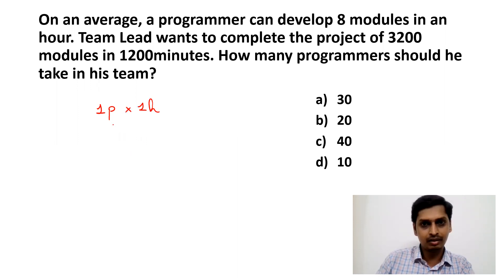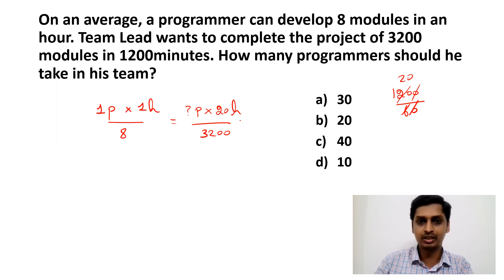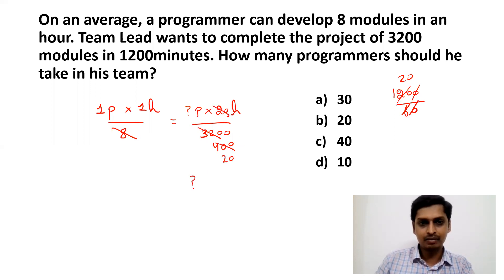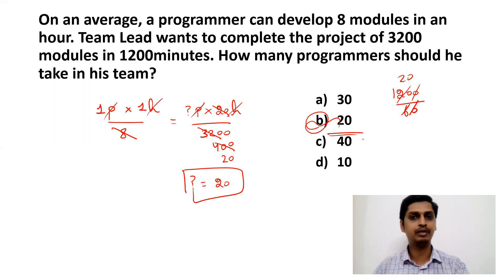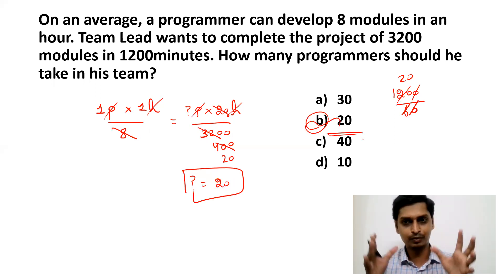We have the concept: M1 D1 H1 / W1 = M2 D2 H2 / W2. One programmer working for one hour will complete eight modules. How many programmers are required to complete 3200 modules in 1200 minutes? 1200 minutes divided by 60 gives us 20 hours. So in 20 hours, 3200 modules need to be completed. Cancelling values: 3200 / (8 × 20) = 20. So 20 programmers are required.